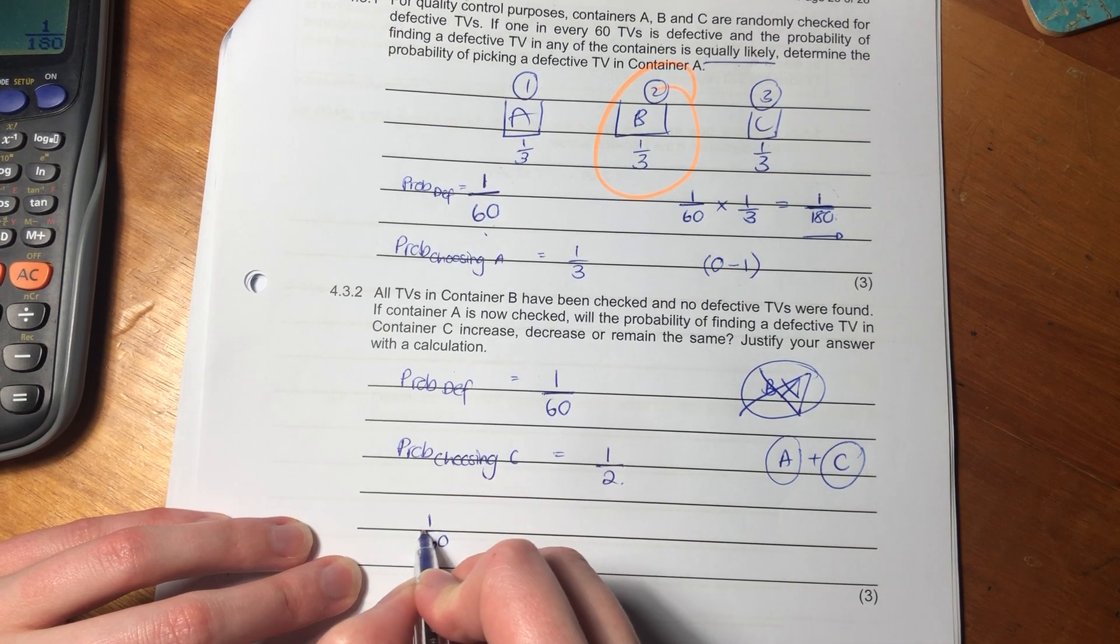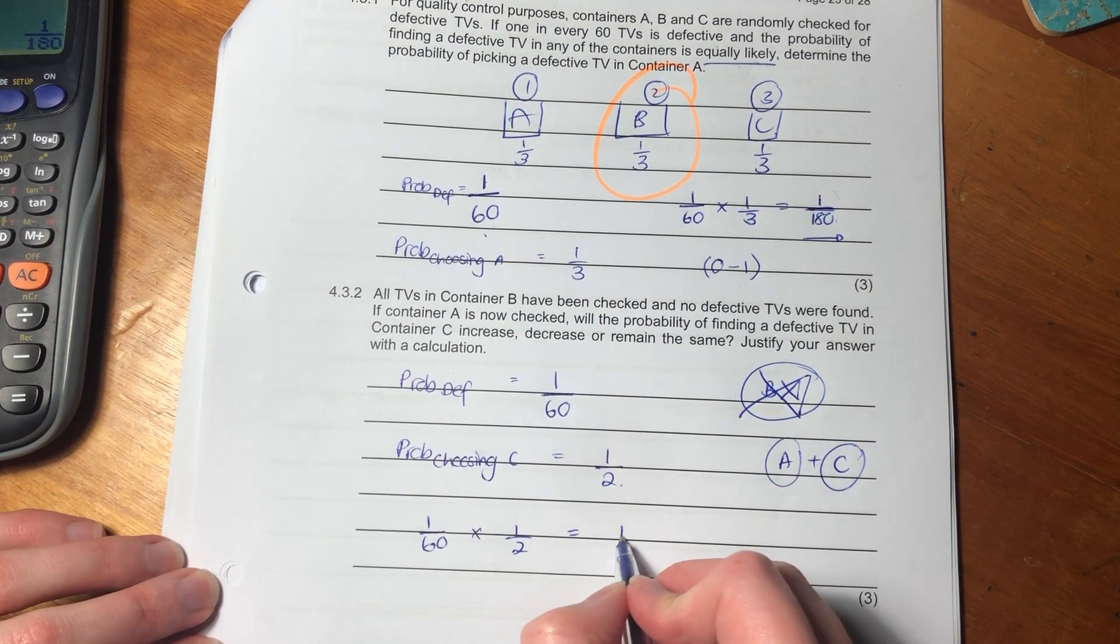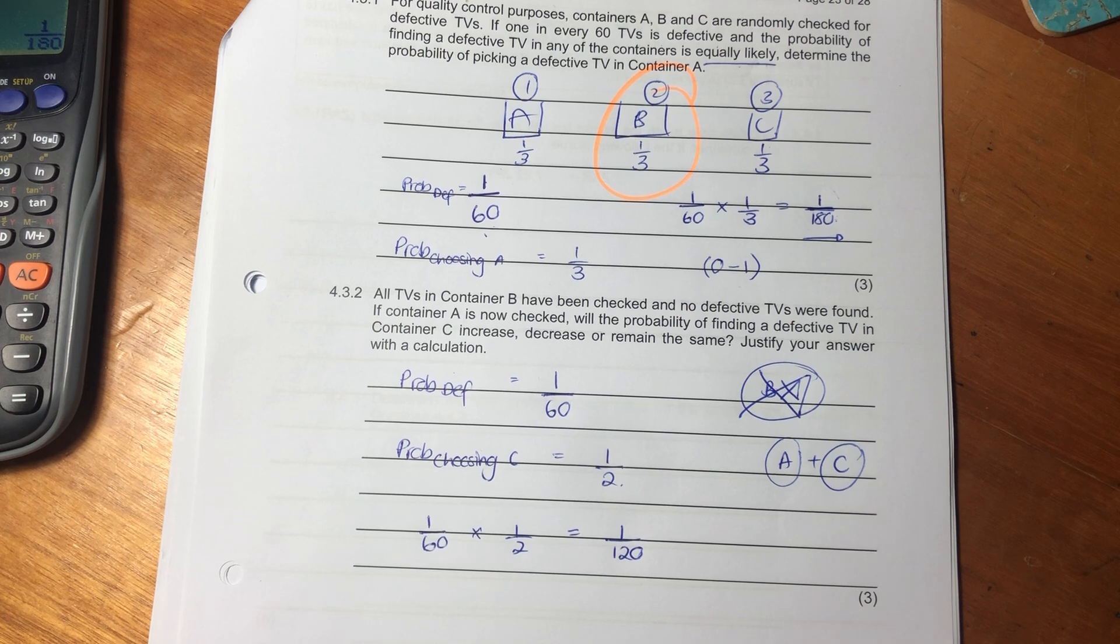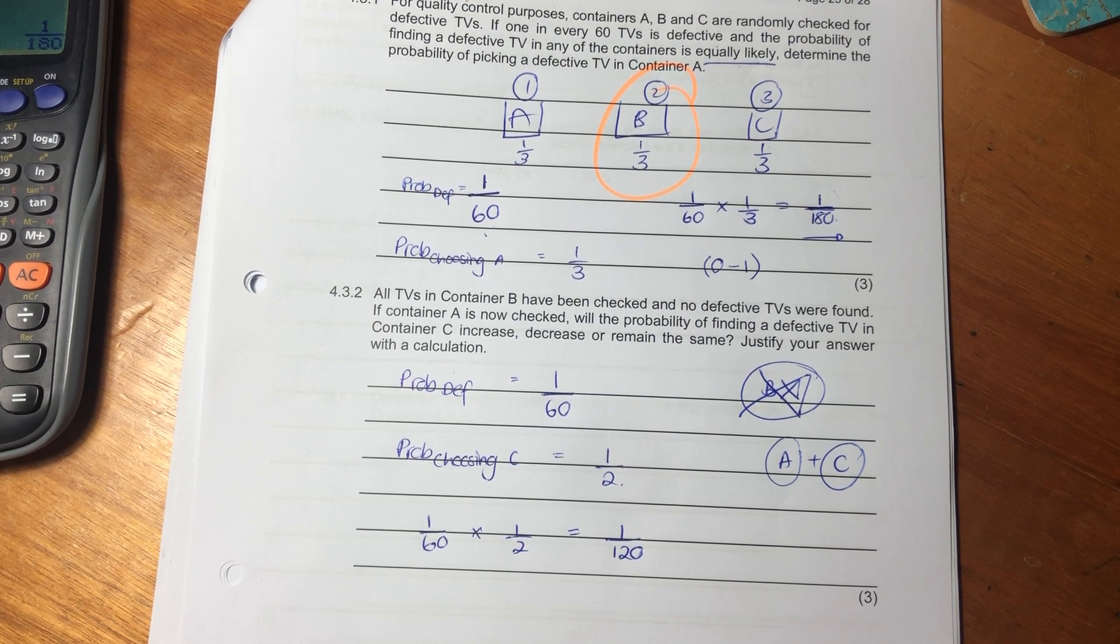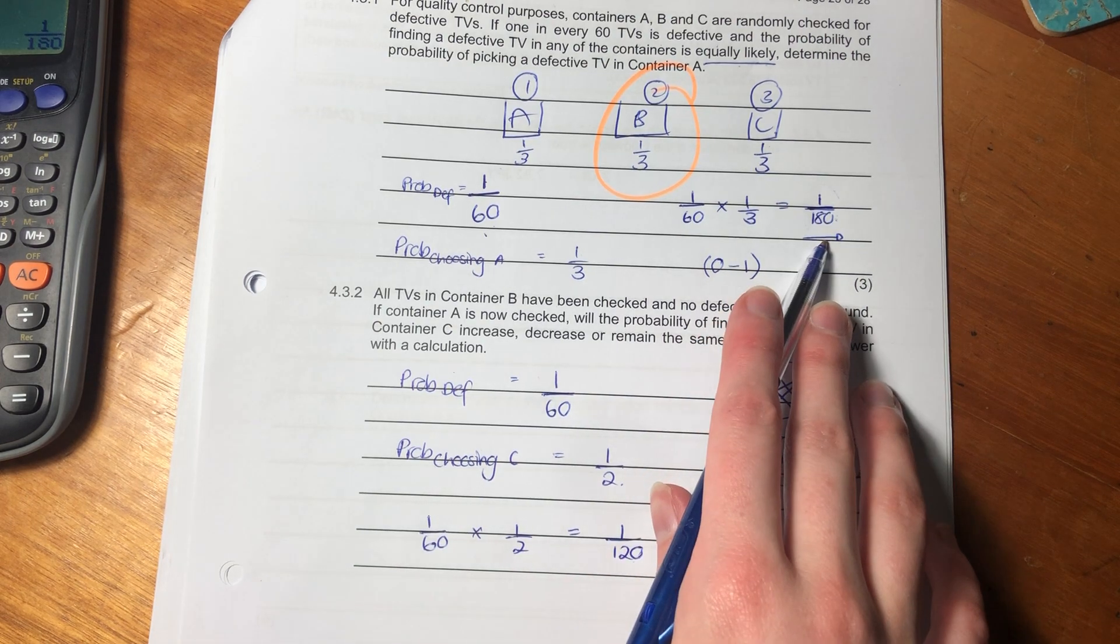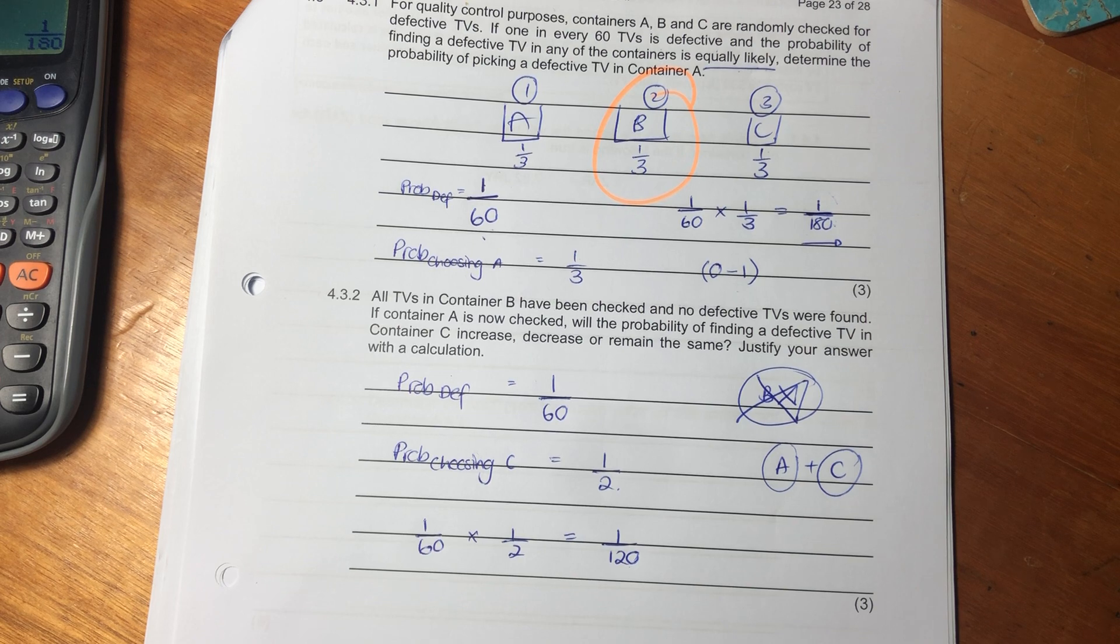They say, basically, they finished checking B, they're now moving on to A, and then they'll move on to C. And they're saying, knowing that B is non-defective, and B is like your top student, B is doing really well. There's nothing wrong with B. But now it's just A and C. So it's saying, if we only have A and C, what is the probability now that we find a defective TV in container C? So the probability of choosing C is now going to be one over two. Remember, the first one for choosing A was one over three, because there were three options. But now there's only two options, because B is taken out of the whole equation. So what is our probability going to be here? It's going to be one over 60, times one over two, which equals one over 120.